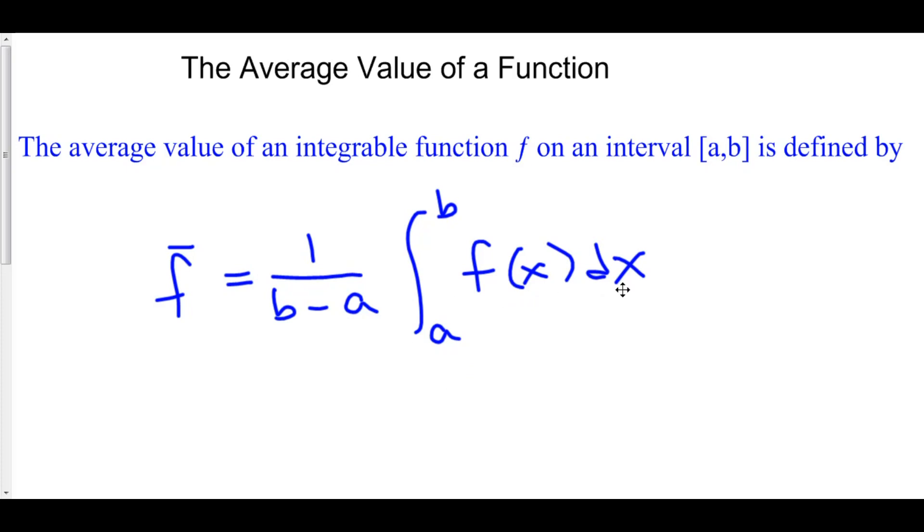1 over b minus a is the same thing as saying take the integral from a to b and divide it by b minus a. Now consider, what are you doing when you're finding the average of a bunch of numbers? Well, you add up all those numbers and you divide by how many there are.